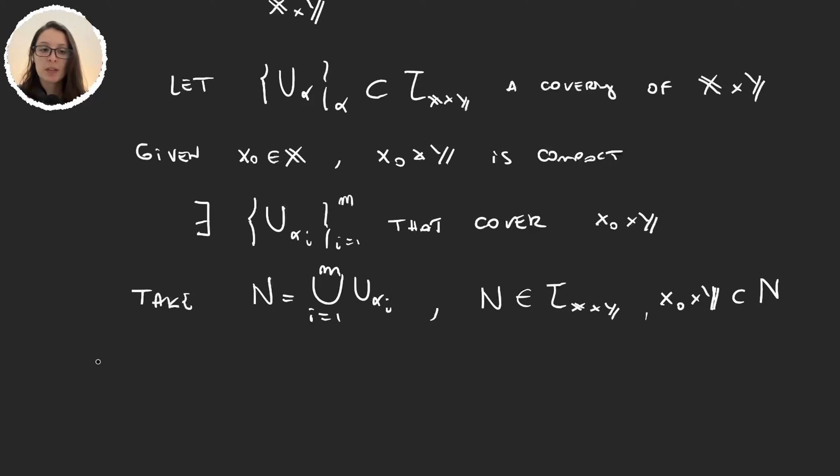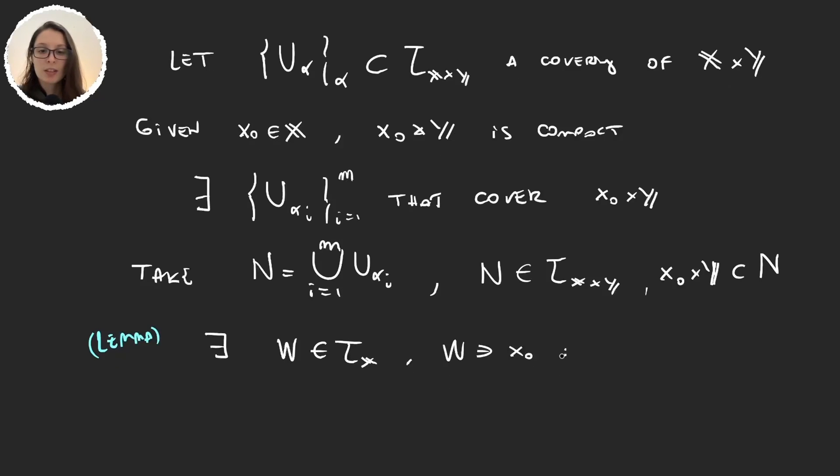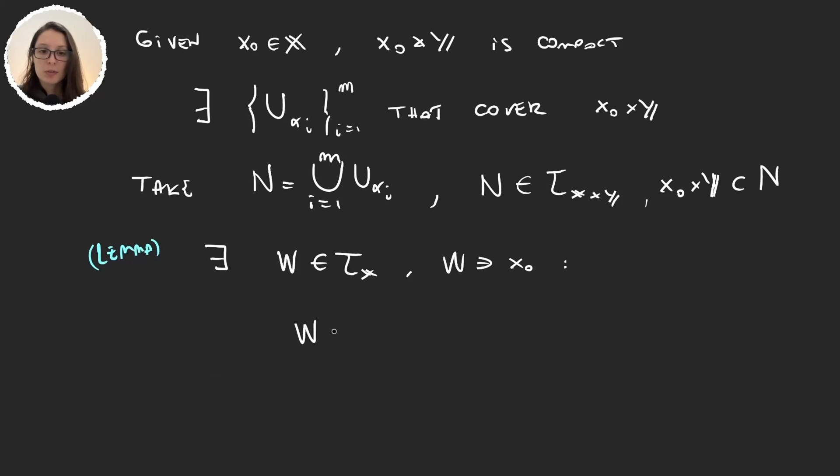Using the lemma, we know that there exists W in the X topology, a neighborhood of x₀, such that W times Y is contained in N, and we can do this for each x in X, so this W that exists is dependent on x₀.